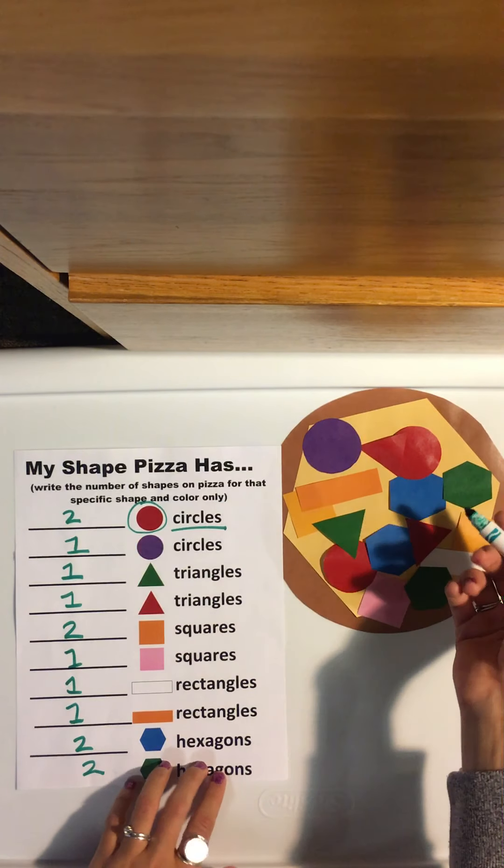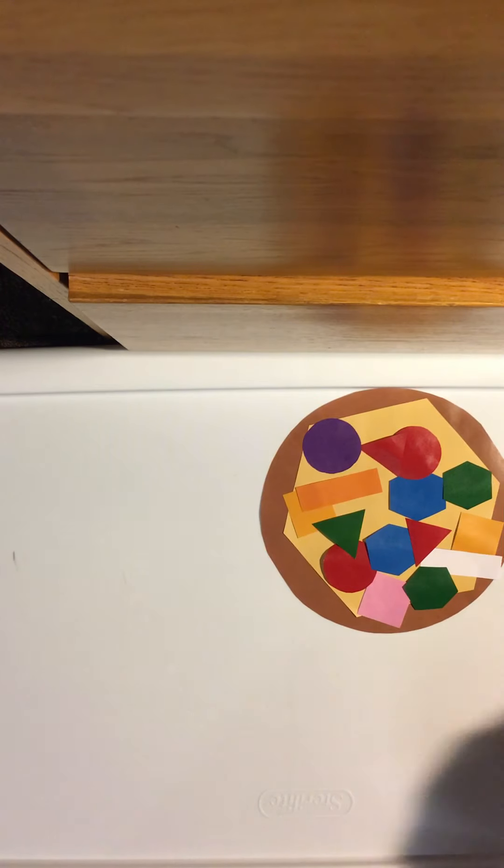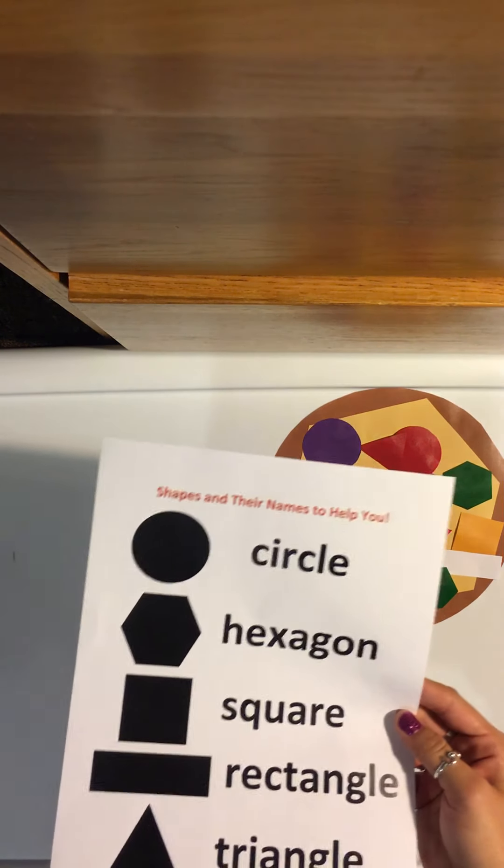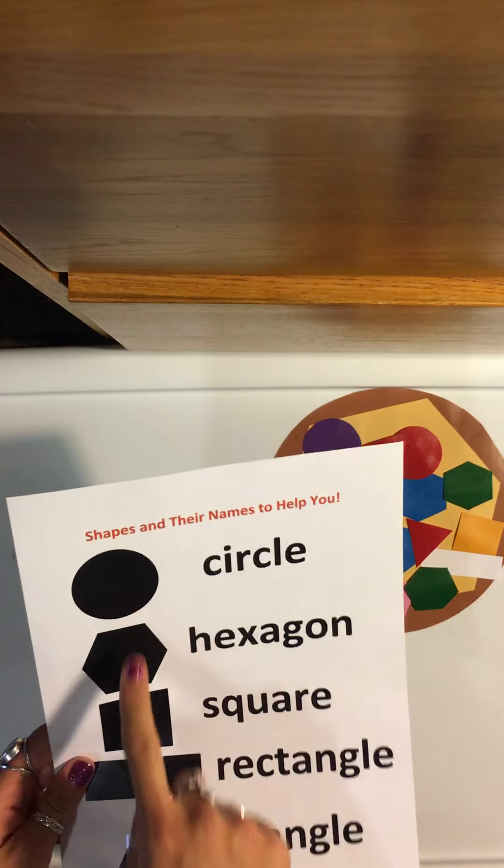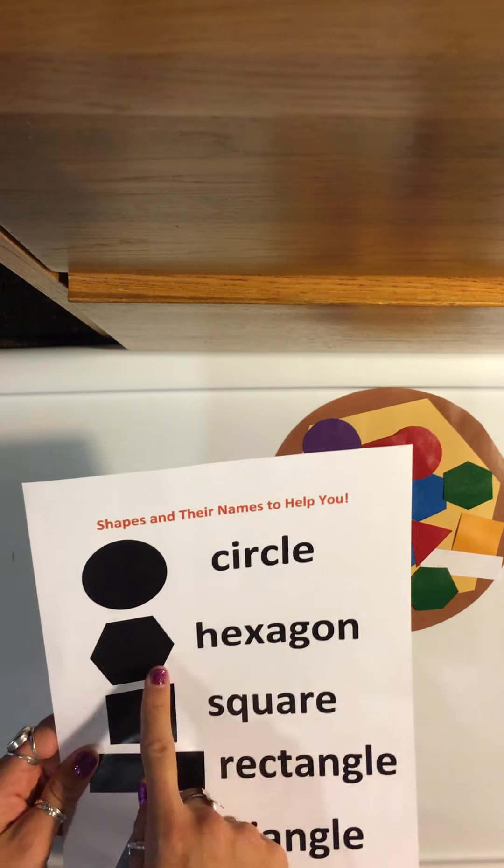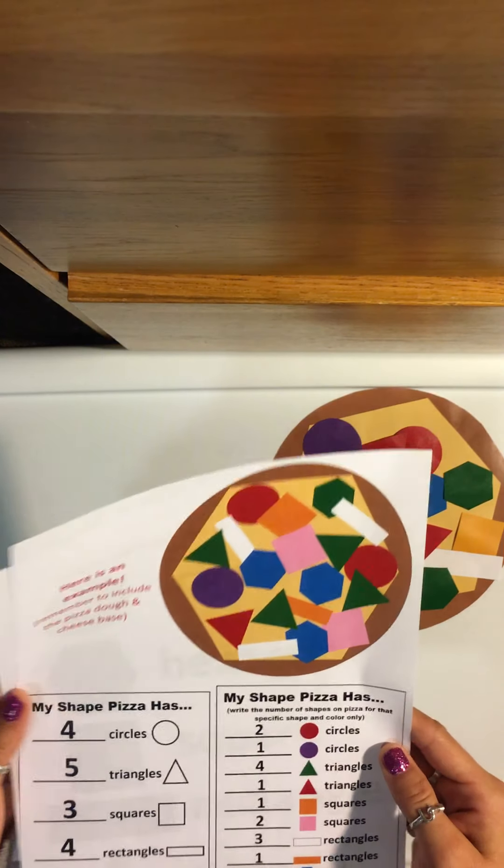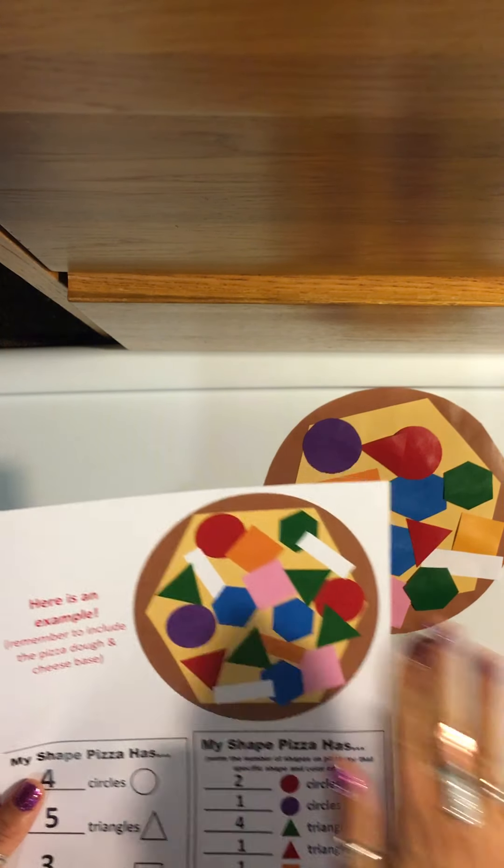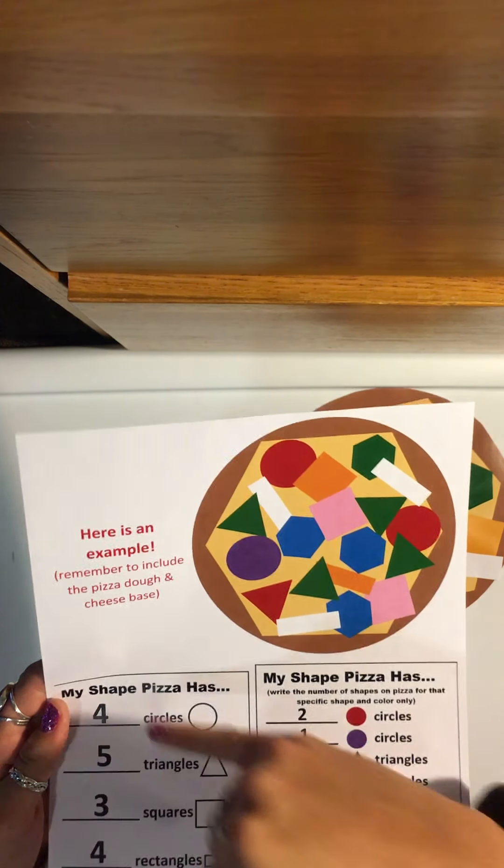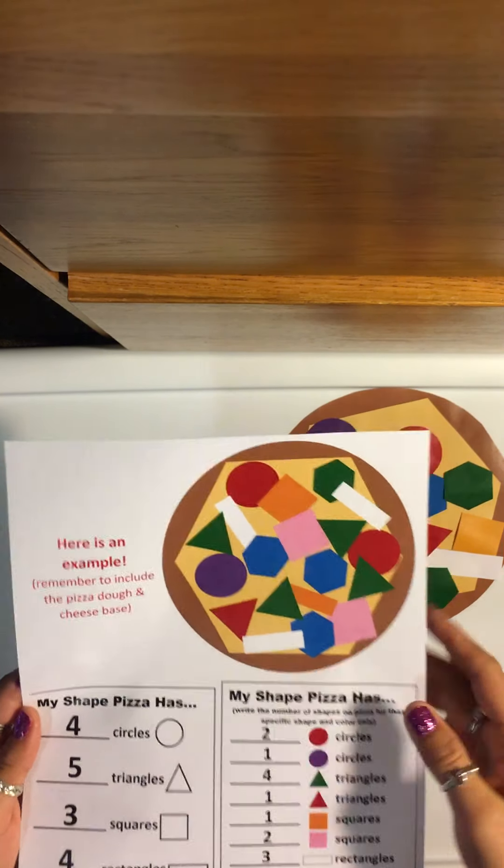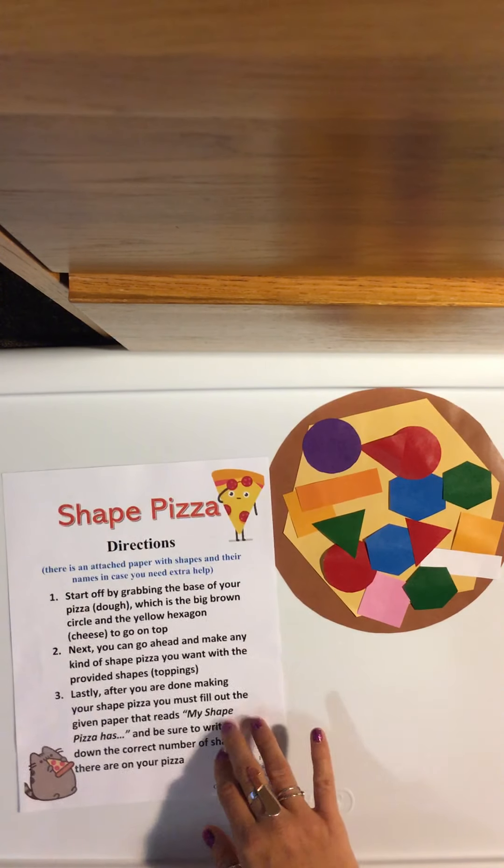And so after that, you can refer back to our shape helping sheet. So I created this just in case you forget. It does tell you the exact name of the shape. And I also created an example paper for you guys that has that same example pizza here with the numbers for each of the worksheets just in case you need a little extra help. That's how you play Shape Pizza.